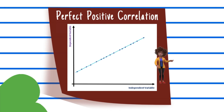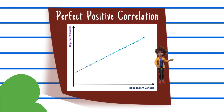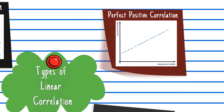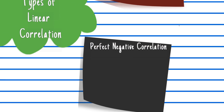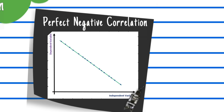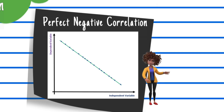Perfect Positive Correlation: in a scatter diagram, if all the points stretch in one line, the correlation is perfect. If two variables change in the same direction and in the same proportion, the correlation between the two is perfect positive. Perfect Negative Correlation: if the variables change in the opposite direction and in the same proportion, the correlation is perfect negative.